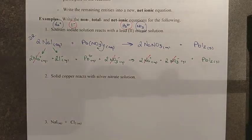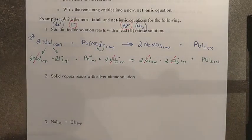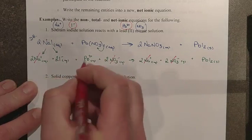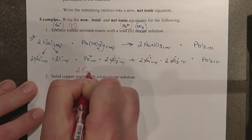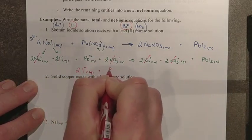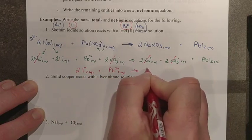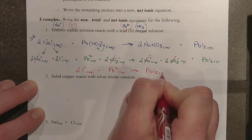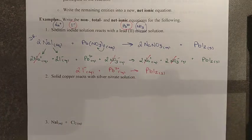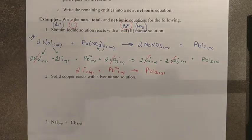And so what we do is we take what remains. While we did mix all these things together, the actual reaction was only between the two iodide ions that you had in solution. The one lead 2 ion you had in solution to make your precipitate of lead iodide. And so that becomes our net ionic equation.